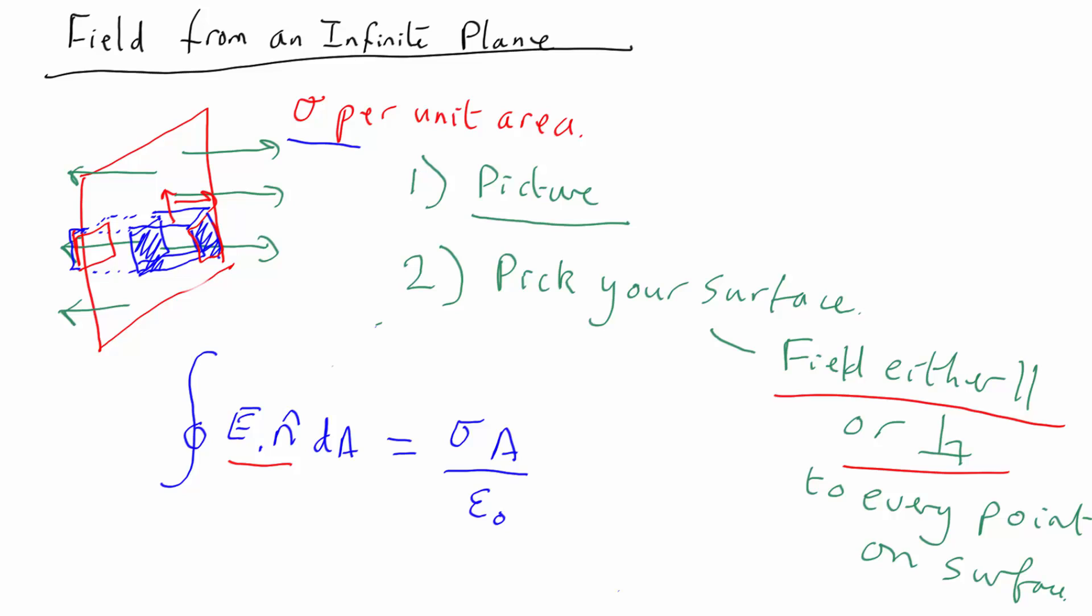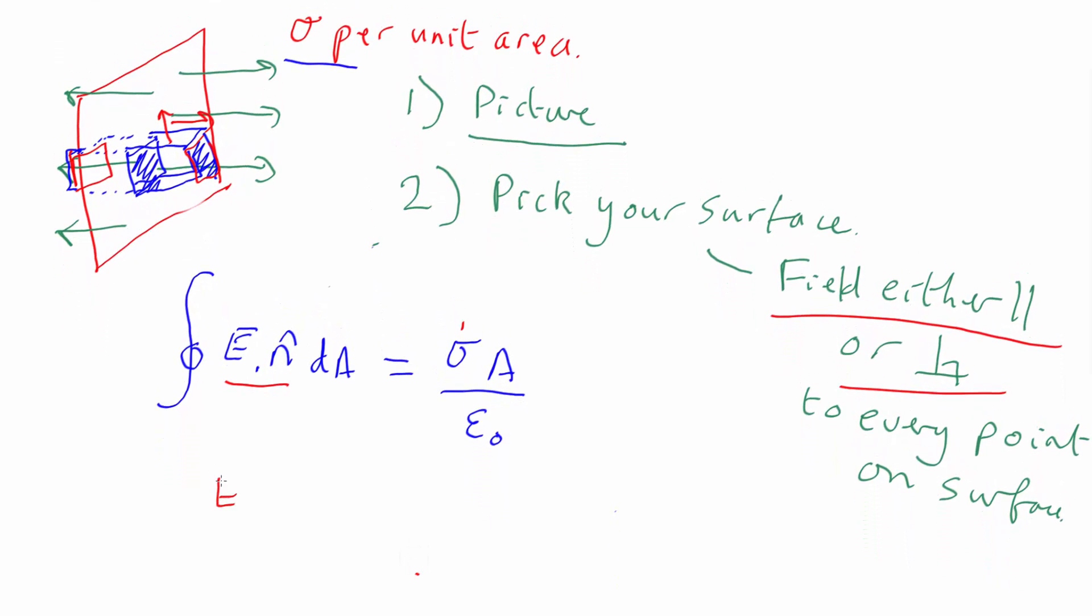And what is the surface integral over those two ends? Well, because the electric field is coming straight out it must be the same everywhere. The electric field is uniform and the surface is perpendicular to it. They're in the same direction, so cos theta is one. So it's just the magnitude of the electric field, so the magnitude of the electric field times the area. So that equals sigma A over epsilon naught.